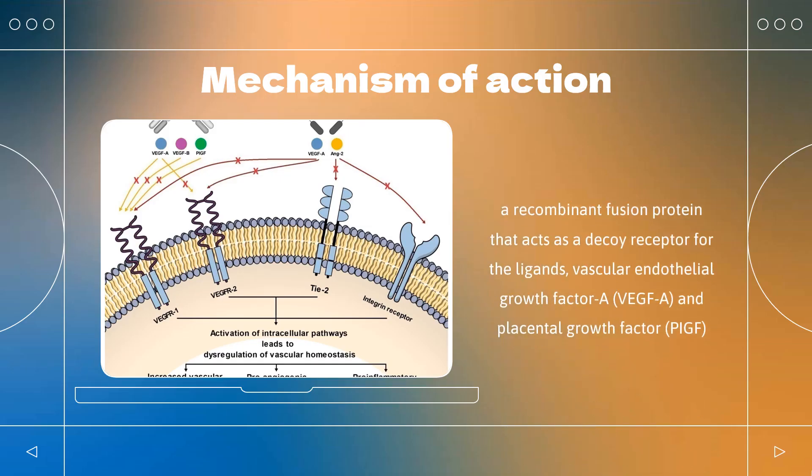Mechanism of Action. Aflibercept is a recombinant fusion protein that acts as a decoy receptor for the ligands vascular endothelial growth factor A (VEGFA) and placental growth factor (PIGF). It prevents these ligands from binding to endothelial receptors VEGFR1 and VEGFR2 to suppress neovascularization and decrease vascular permeability. This ultimately will slow vision loss or the progression of metastatic colorectal cancer.